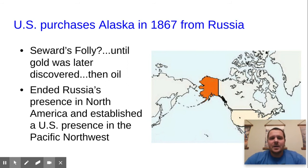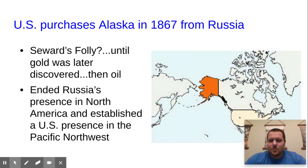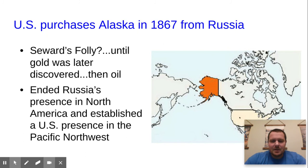The first example you'll want to jot down notes on is the United States purchase of Alaska. In 1867, the Civil War had just ended, and the Secretary of State named William Seward decided it might be a good idea to buy Alaska from Russia. The idea was to establish a US presence in the Pacific Northwest. As you can see on the map, Alaska is highlighted in orange. People thought he was crazy because Alaska was literally just seen as a large frozen piece of land. It wasn't until many years later that gold was discovered, and eventually oil was discovered in Alaska.